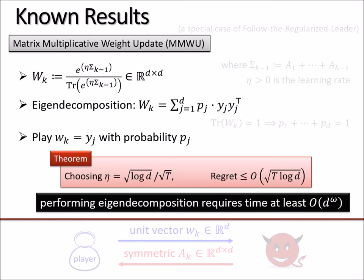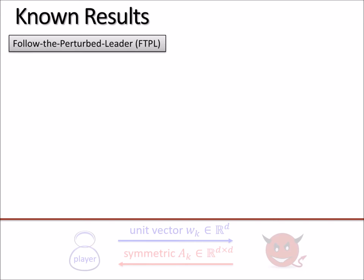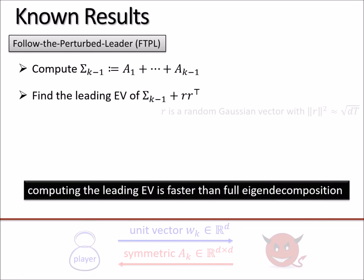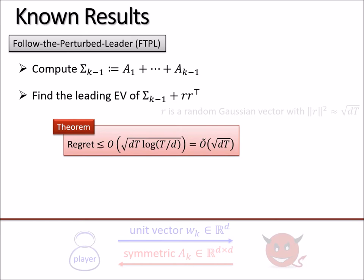That takes running time at least matrix inversion, which is d^ω, like 2.3 something. And also it's very impractical. For this reason, researchers also started to design a separate kind of strategy called follow the perturbed leader. Here's how it works. Very simple. In each iteration k, again we compute the partial sum, and this time instead we compute the leading eigenvector, the maximum eigenvector, of this partial sum plus a random perturbation RR^T. It's a random rank 1 matrix where R is a random Gaussian vector with norm being appropriately chosen. So this strategy runs fast.